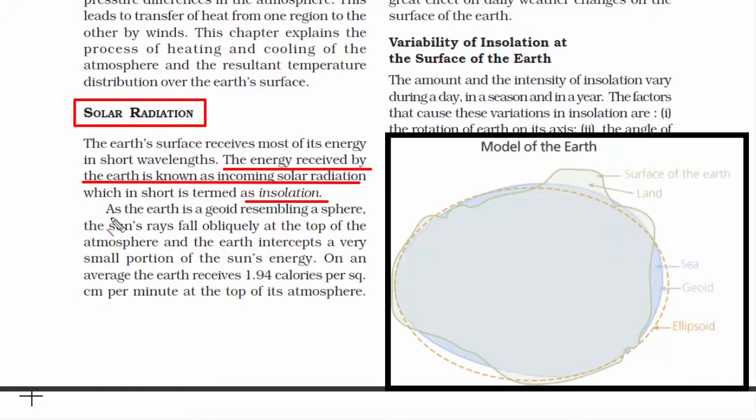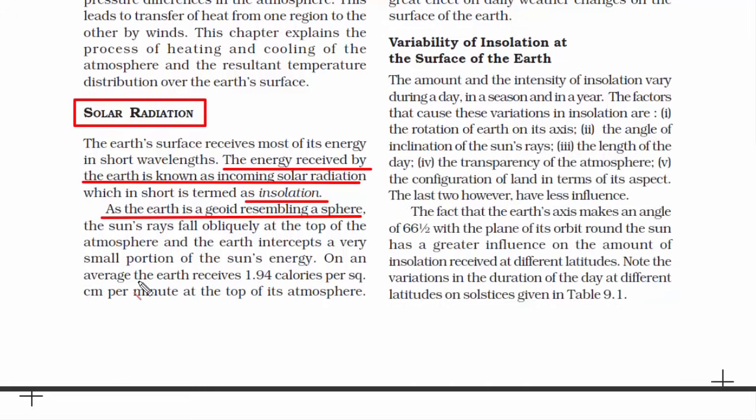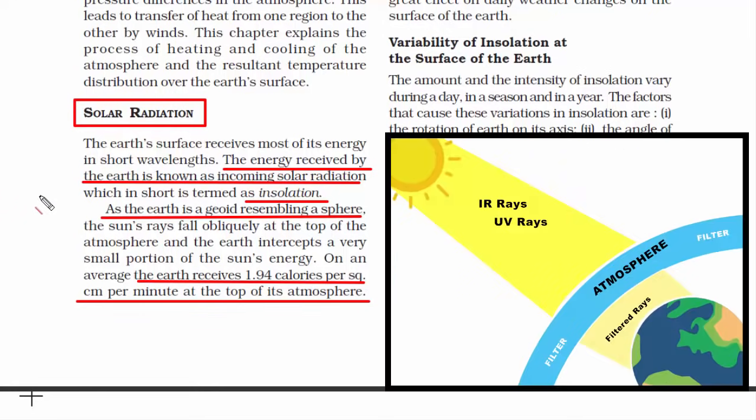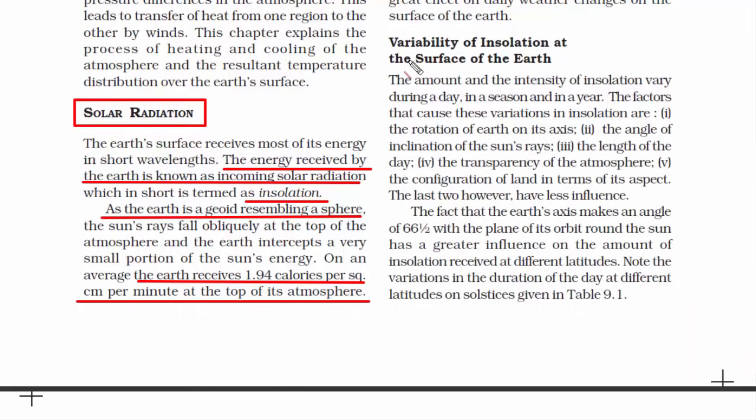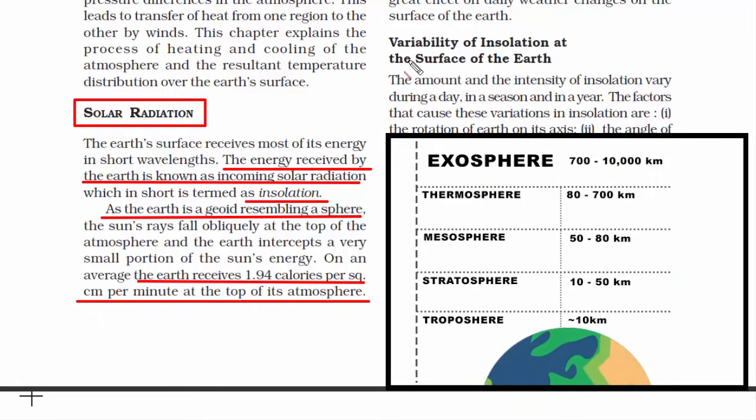Now we all know that Earth is a geoid, resembling a sphere, meaning the Earth does not have a perfect shape. The amount of solar energy reaching the Earth's atmosphere is 1.94 calories per square centimeter per minute. The atmosphere blocks most of the sunlight. I've explained that the atmosphere has five layers. The outermost layer is the exosphere. So the sun rays first hit the outer layer of the atmosphere,